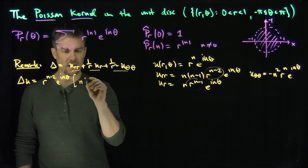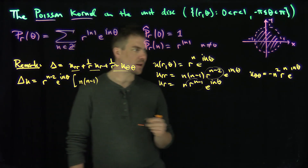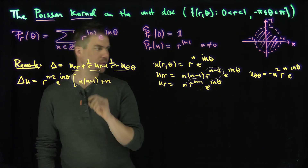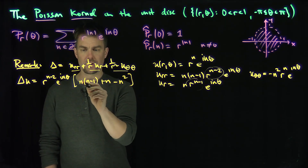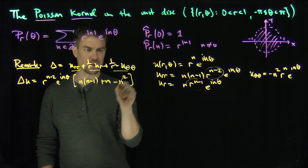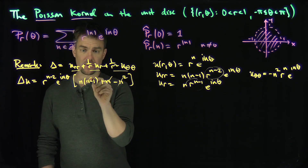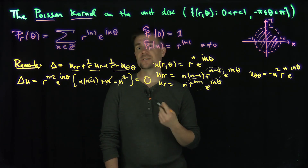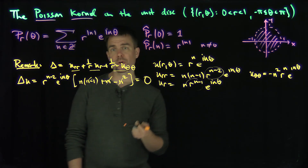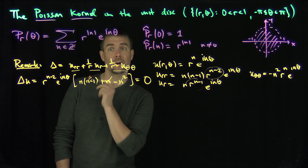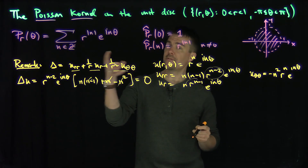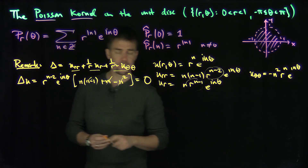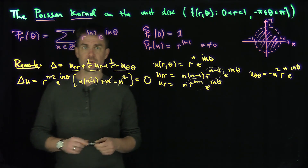What's left over is n(n-1) plus n minus n², and look: there's an n² here and a negative n² here — those cancel. And there's a negative n and a positive n — those cancel too. So the Laplacian of these functions equals zero. In other words, the Poisson kernel is an infinite sum of harmonic functions.